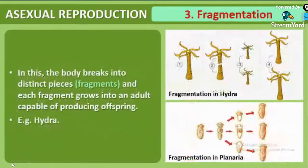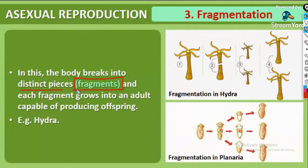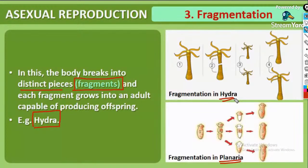Fragmentation means the body breaks up into distinct pieces, and each piece is called a fragment. Examples: Spirogyra, Planaria, Hydra. These fragments are capable of growing into an adult organism. Hydra, Planaria, and Spirogyra all show both fragmentation and regeneration property.